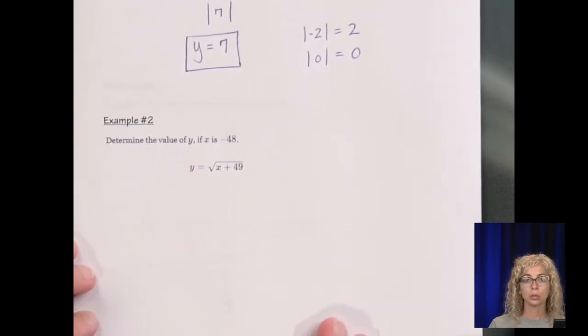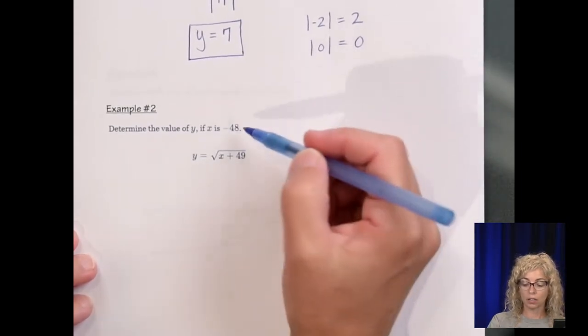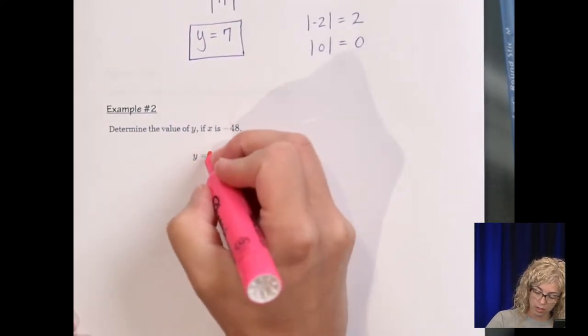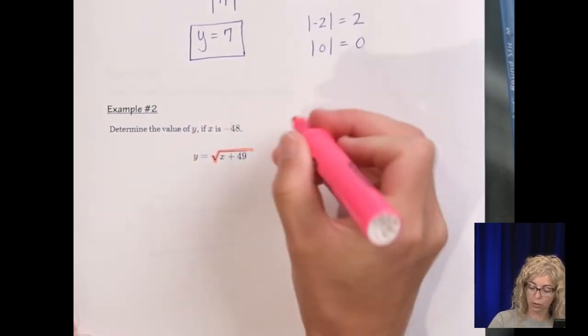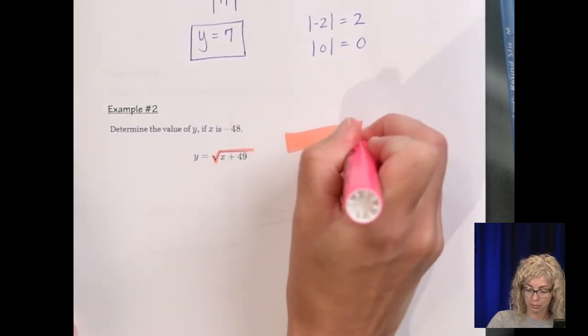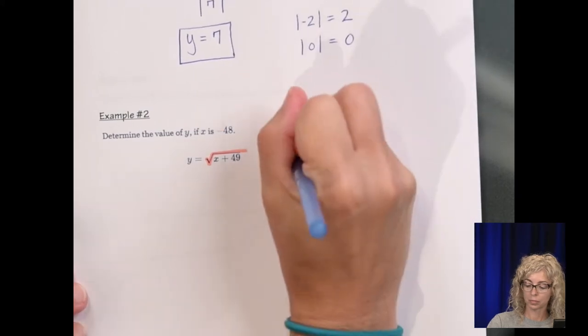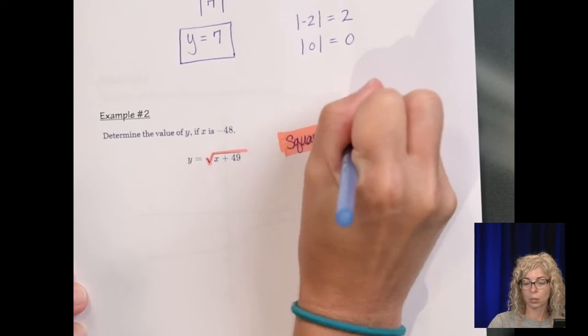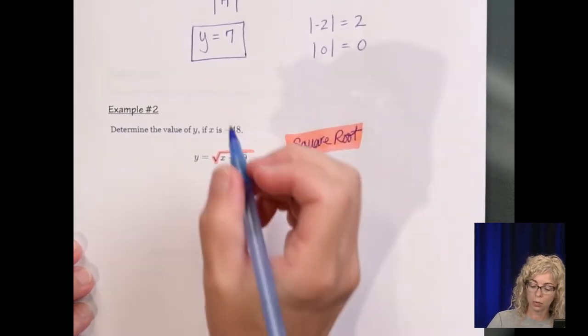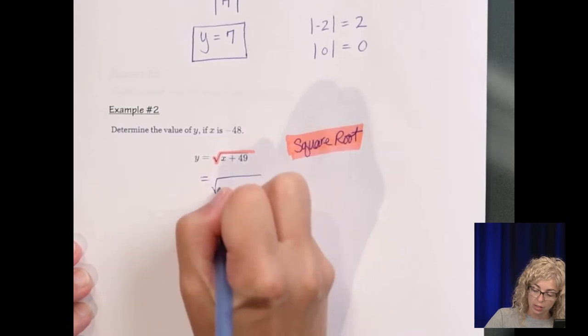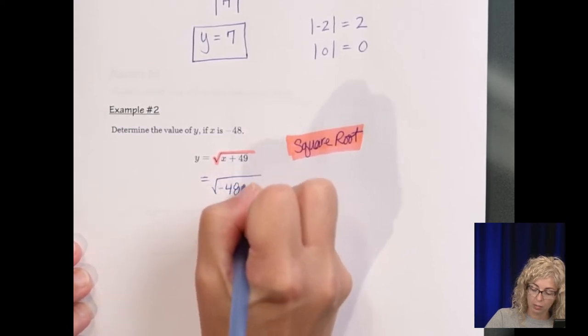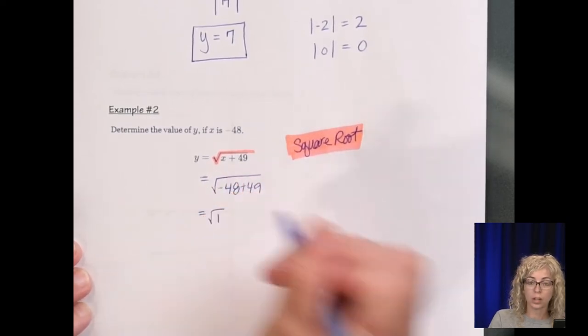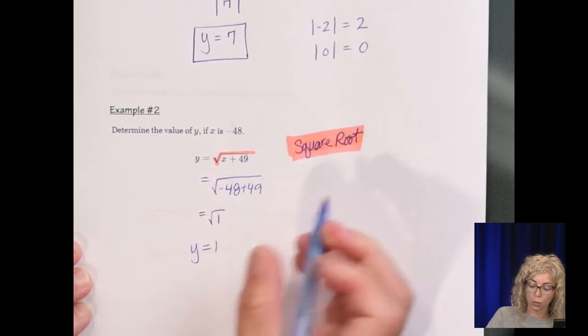Example number 2. Determine the value of y if x is negative 48. Now we've changed functions to our square root function. And we'll take a look at each of their graphs. So we plug in the value of x, so negative 48 plus 49. We want to perform that operation. So negative 48 plus 49 is 1. And the square root of 1 is 1.